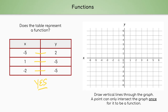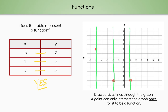Now that we know it's a function, let's put it on a graph and see how the vertical line test looks. Let's graph these three points: negative 5, 2; positive 1, negative 5; and negative 2, negative 5. Now let's use the vertical line test. We'll draw vertical lines — the first goes through exactly one point, the second goes through exactly one point, and the third goes through exactly one point. This passes the vertical line test — yes, it is a function.